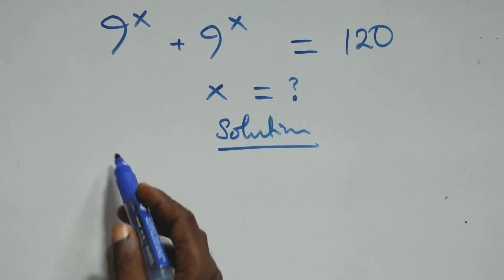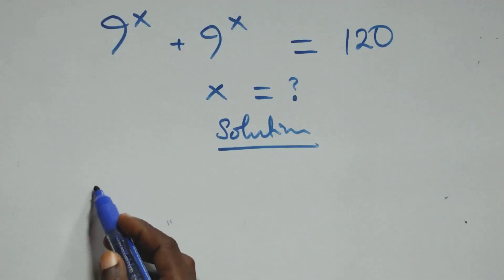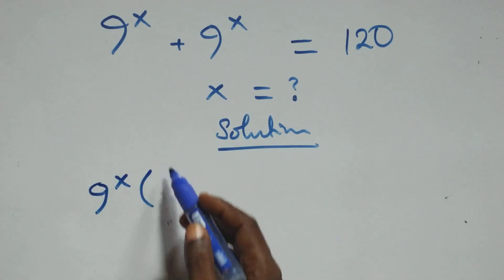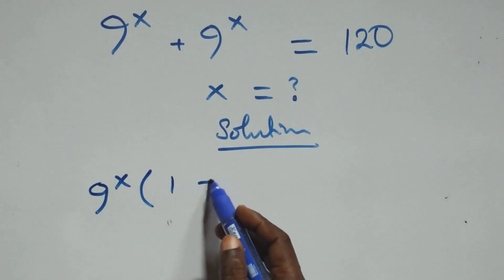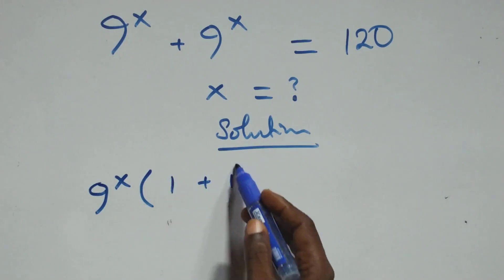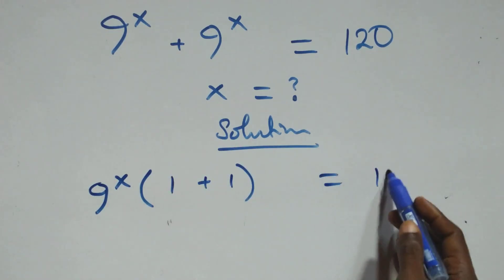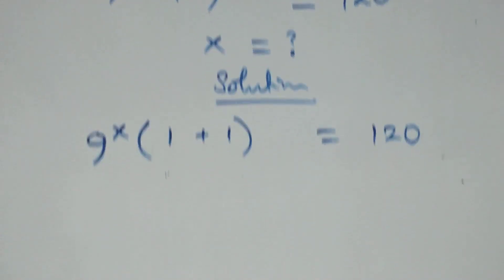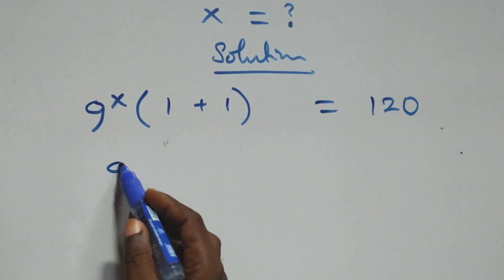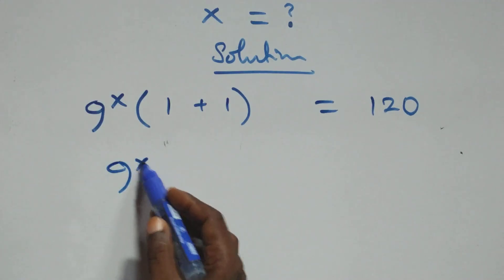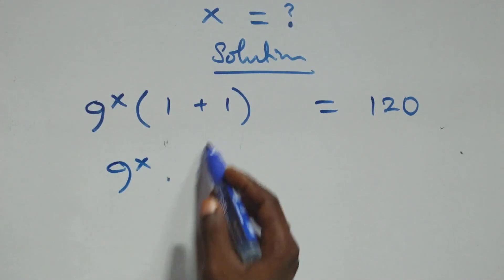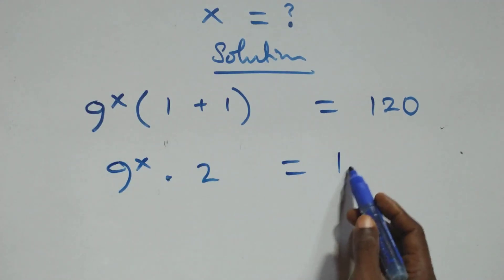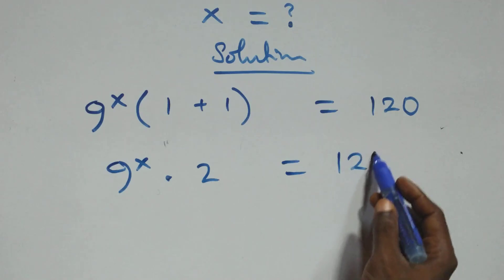Here we factor 9 raised to the power x out, and we have 9 raised to the power x into brackets 1 plus 1 equals 120. So we have 9 raised to the power x times 1 plus 1, which is 2, equals 120.